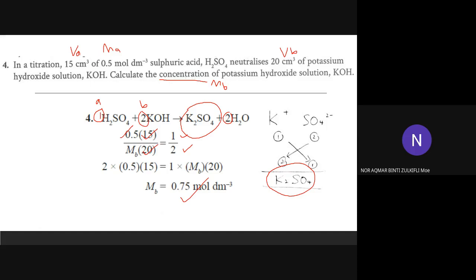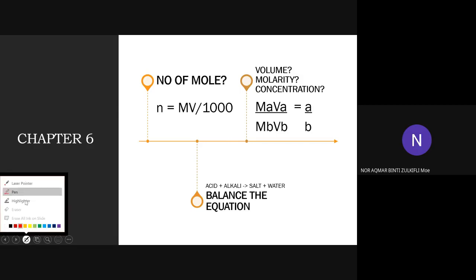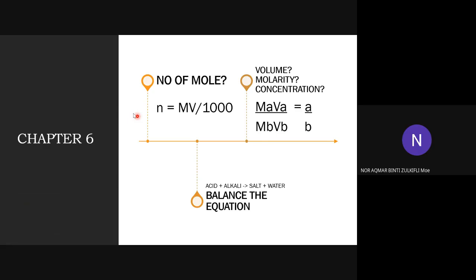I hope you understand this topic. Let's reflect on the main important things in this chapter. You must know the number of mole formula MV over 1000 — refer to your textbook for question types requiring that formula. Today we focused on volume, molarity, and concentration using MAVA over MBVB equals A over B, and how to balance the equation using: acid plus alkali produces salt plus water.